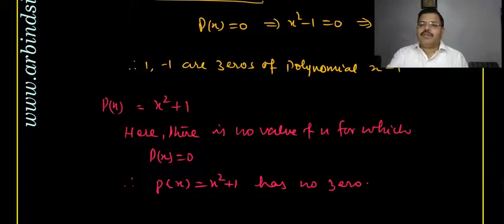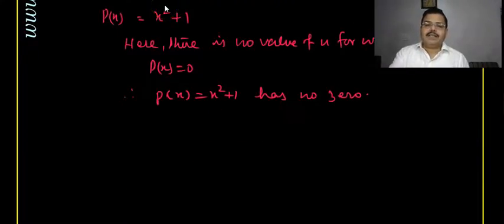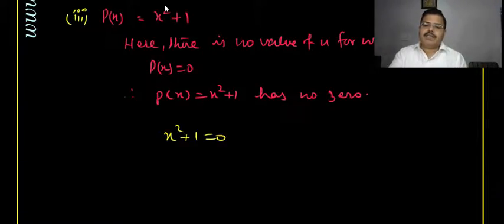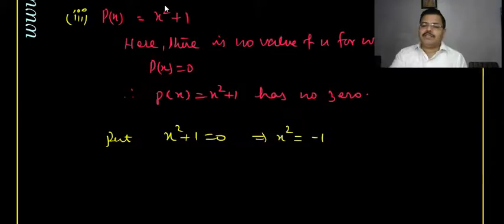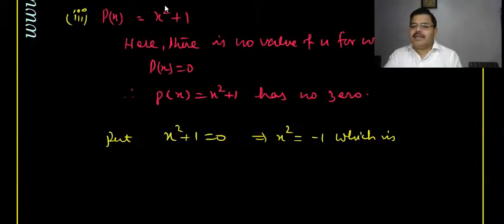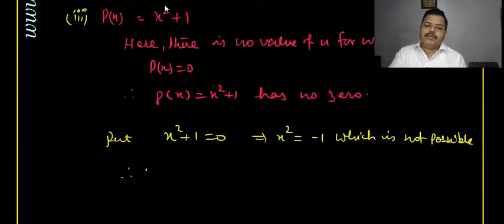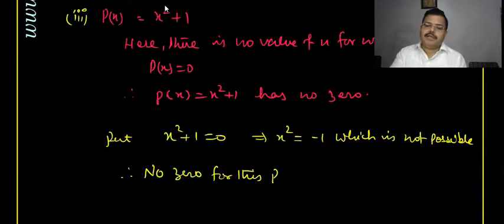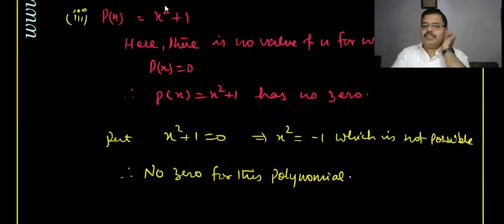Using the alternative method for p(x) = x² + 1: put x² + 1 = 0, which gives x² = −1. A square of any real number cannot be negative, so this is not possible. Therefore there is no zero for this polynomial.